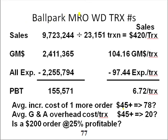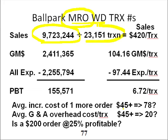But back in those days, my thinking went something along like this. You can see this is sort of a maintenance, repair, and operating supply distributor — and these are real numbers, actually. A distributor was doing this much in sales on an annual basis out of 23,000 plus transactions. So if you divide 23,000 into sales, margin dollars, expenses, and profit, these are the average numbers you get over here.